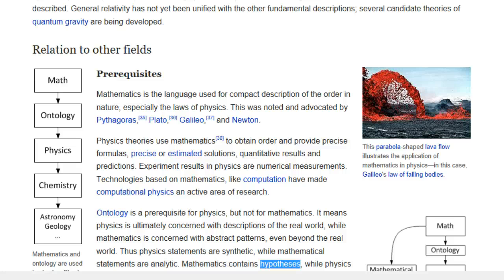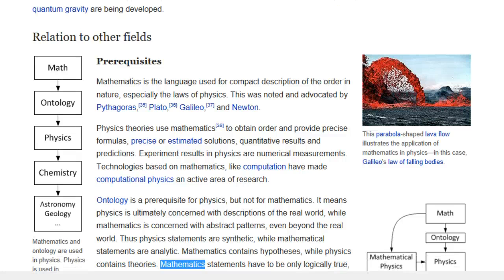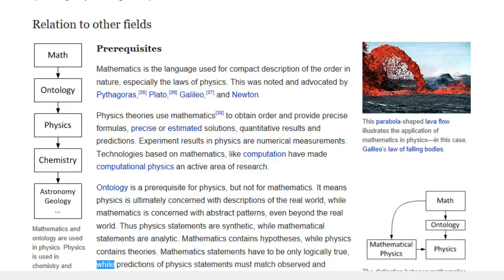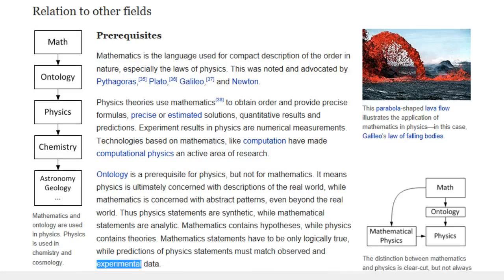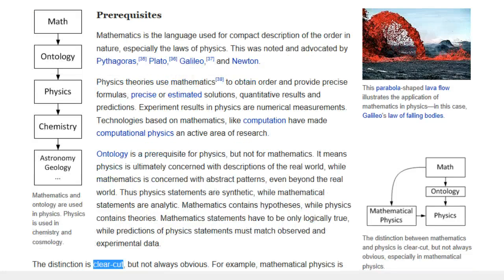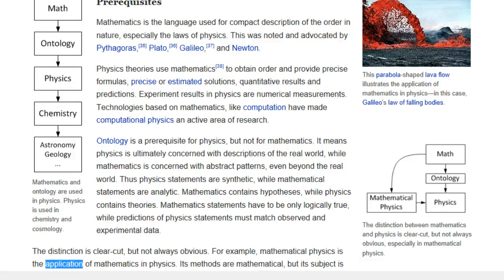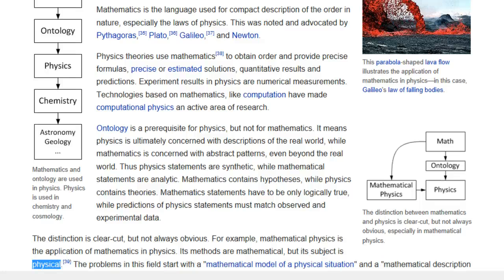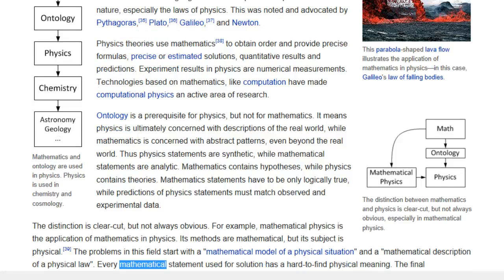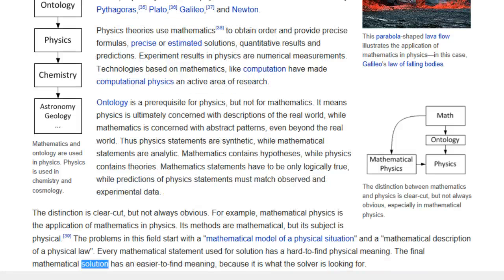Mathematics contains hypotheses, while physics contains theories. Mathematics statements have to be only logically true, while predictions of physics statements must match observed and experimental data. The distinction is clear-cut, but not always obvious. For example, mathematical physics is the application of mathematics in physics. Its methods are mathematical, but its subject is physical. The problems in this field start with a mathematical model of a physical situation and a mathematical description of a physical law. Every mathematical statement used for solution has a hard-to-find physical meaning. The final mathematical solution has an easier-to-find meaning, because it is what the solver is looking for.